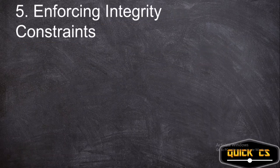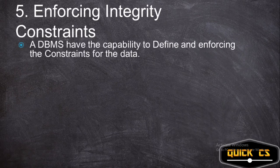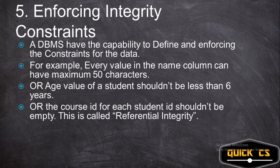Now let's look at the third security advantage: enforcing integrity constraints. Referential integrity is maintaining the state of the database so that it does not malfunction because of entries made by users. For example, every value in the name column can have a maximum of 50 characters, or the age of a student shouldn't be less than 6 years in a school admission process.